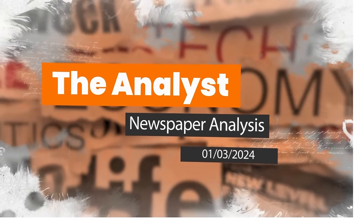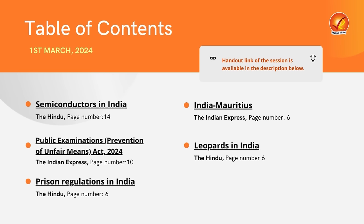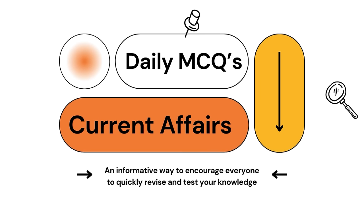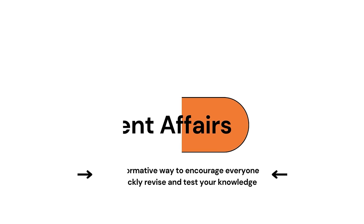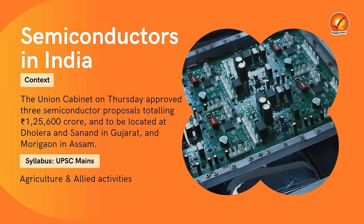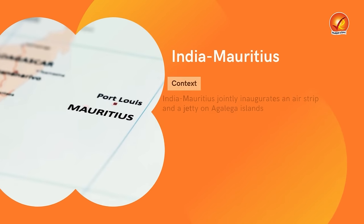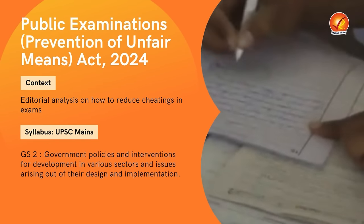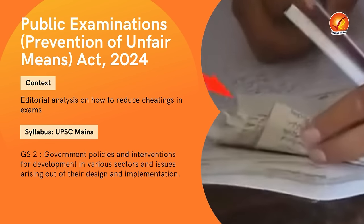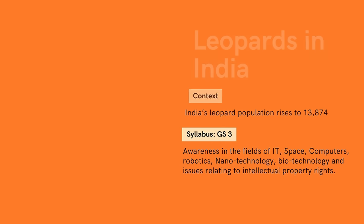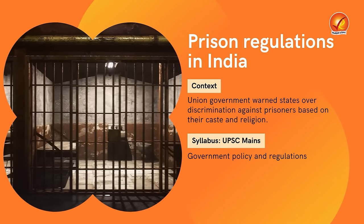Hello everyone and welcome back to The Analyst. Today is the first of March and a good day to learn about the following five current affairs articles. Before that, a gentle reminder to download the handout from the description box below, so you can fully enjoy the session without being concerned about note-taking. We'll evaluate the semiconductor manufacturing industry in India, India-Mauritius relations, an editorial on reducing cheating in exams, leopard population in India, and prison regulations.